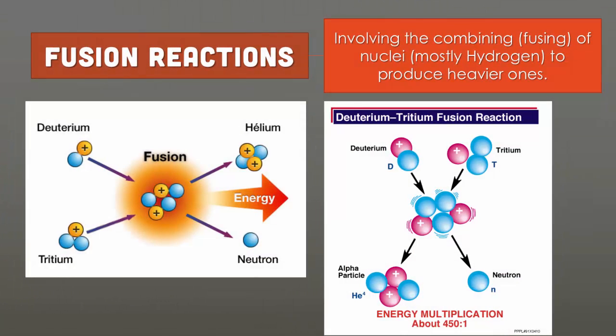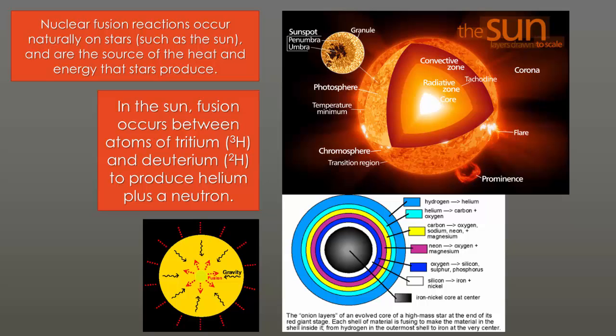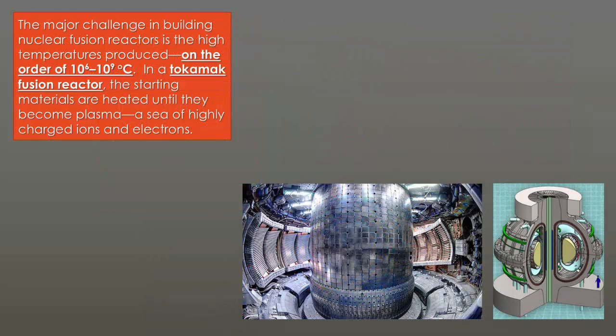The fusion reaction is the opposite of fission. If fission is to split, fusion is to combine together. Fusion reactions use very light nuclei. We're talking about hydrogen. Anytime you see a question on fusion, it's always involving hydrogen. Fusion reactions always occur in stars, such as our sun, and are the source of all heat and energy that the star produces. In the sun, fusion occurs between atoms of tritium, which is hydrogen with a mass of 3, and deuterium, which is hydrogen with a mass of 2, to produce helium and a neutron. The major challenge in building nuclear fusion reactors is the high temperatures produced. It's about 10 to the 6th to 10 to the 9th degree Celsius, which is incredibly high. It's in the billions of degrees.